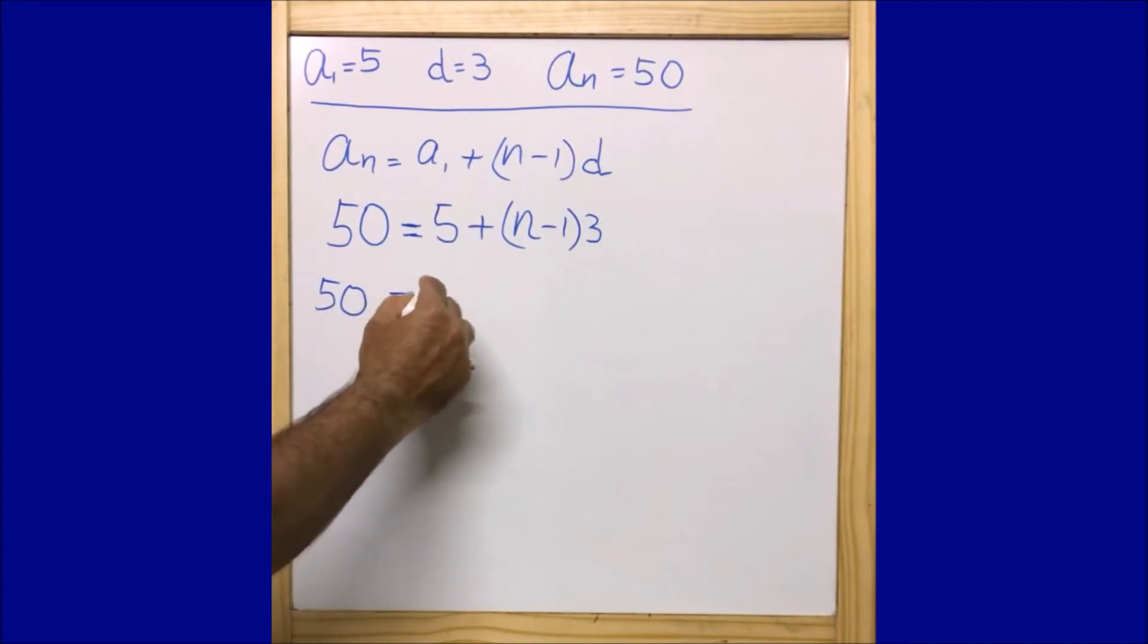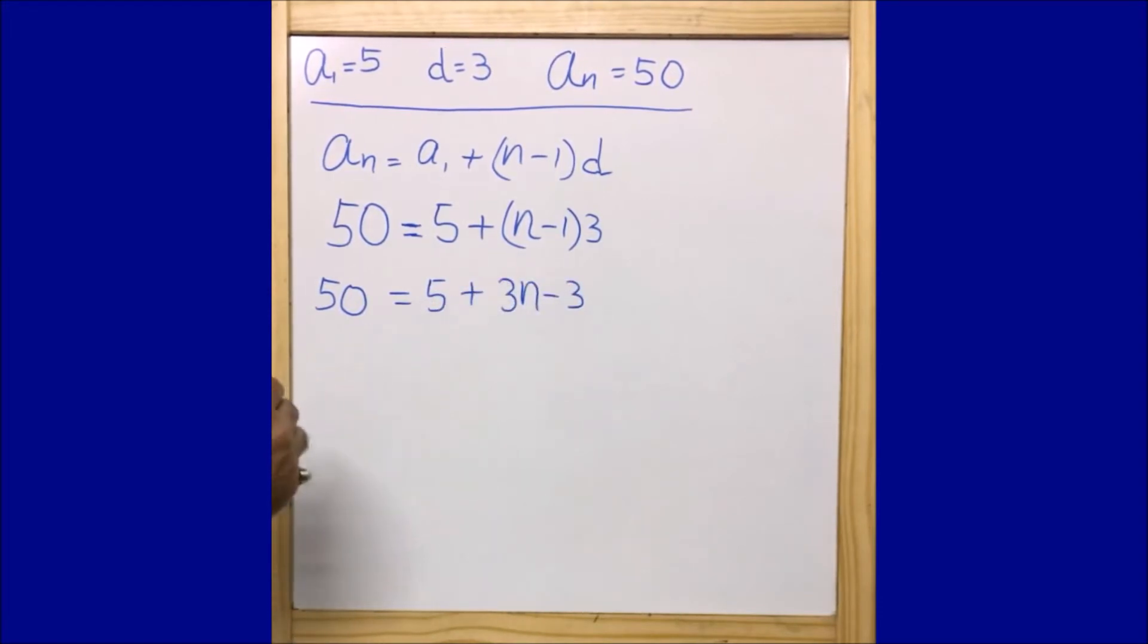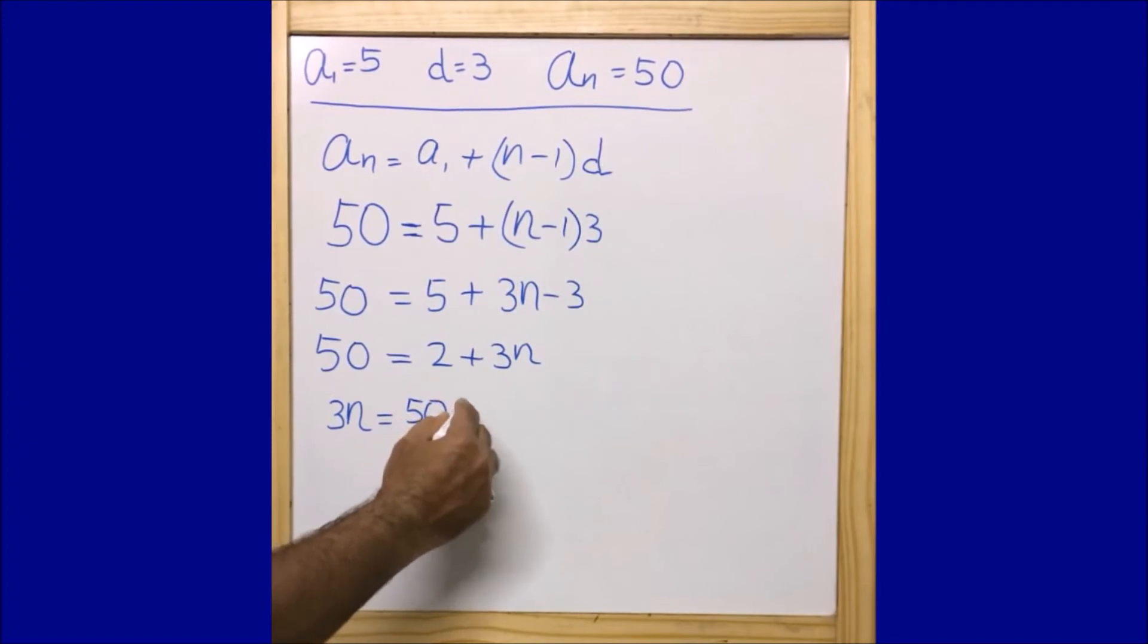After solving this equation, we get: 50 equals 5 plus 3n minus 3, or 50 equals 2 plus 3n, or 3n equals 50 minus 2.